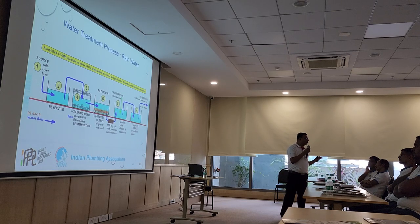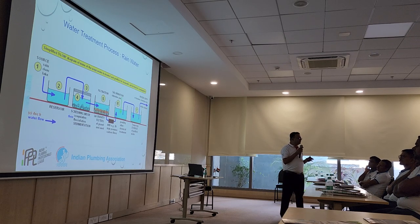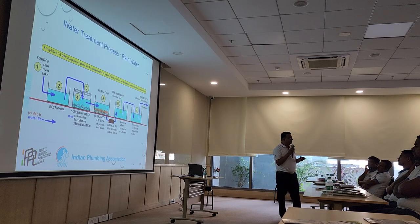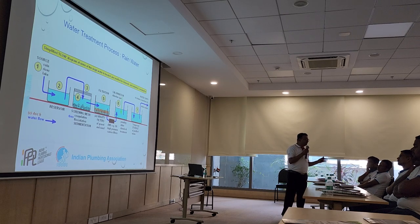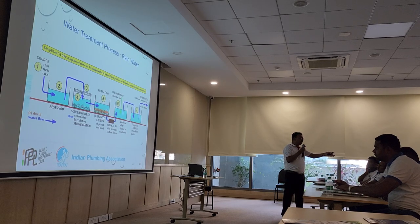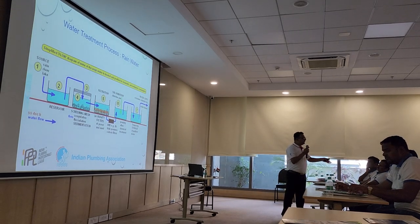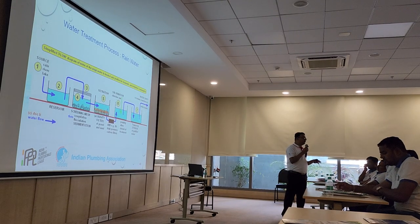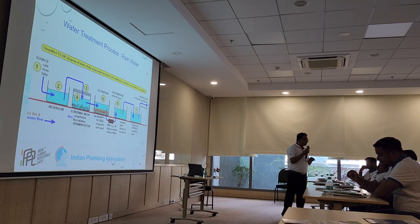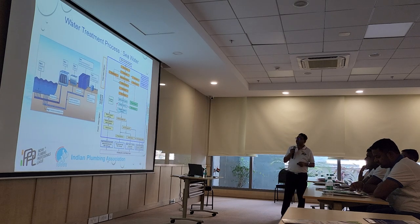For rainwater: theoretically it is good quality, but in metro cities we don't get good quality rain due to pollution. The process would be reservoir, screening, gravity filters, possible chemical treatment, temporary storage, and distribution. However, rainwater is dangerous to drink directly because we are habituated to drinking water that contains minerals, and rainwater does not have minerals. You should mix it with normal water or put a mineralization plant with the rainwater harvesting storage tank before distributing it for drinking.